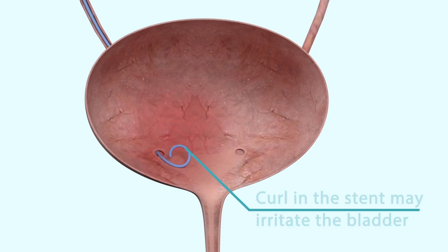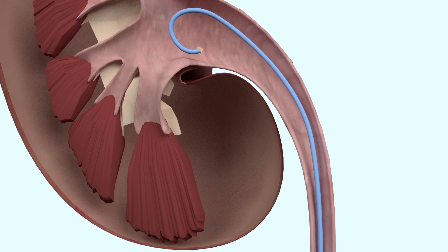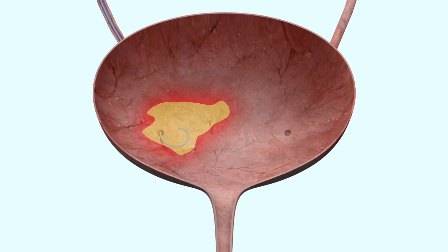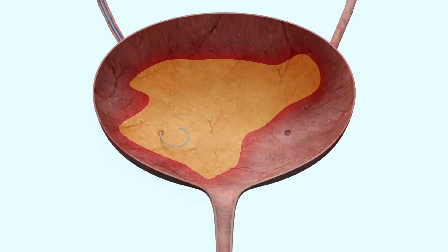The stent can be uncomfortable for three reasons: the curl of the stent irritating the bladder causing frequent urination; reflux of urine up the stent causing back discomfort; and pain in the urine causing it to be red in colour.